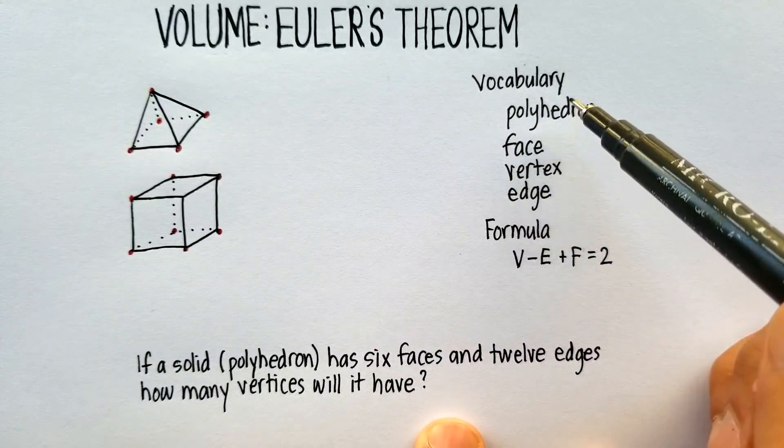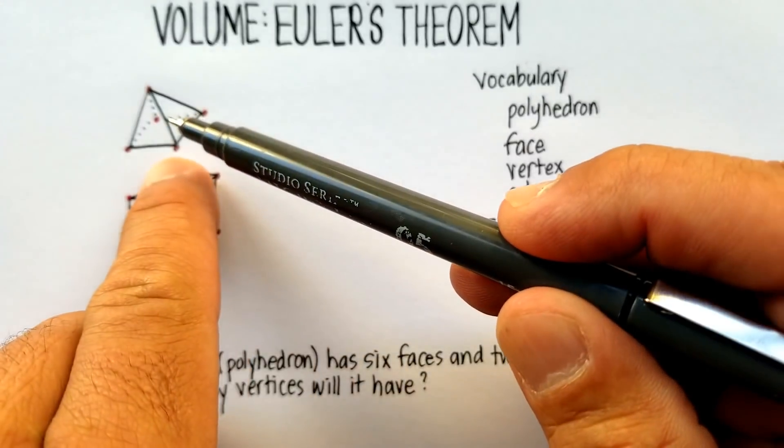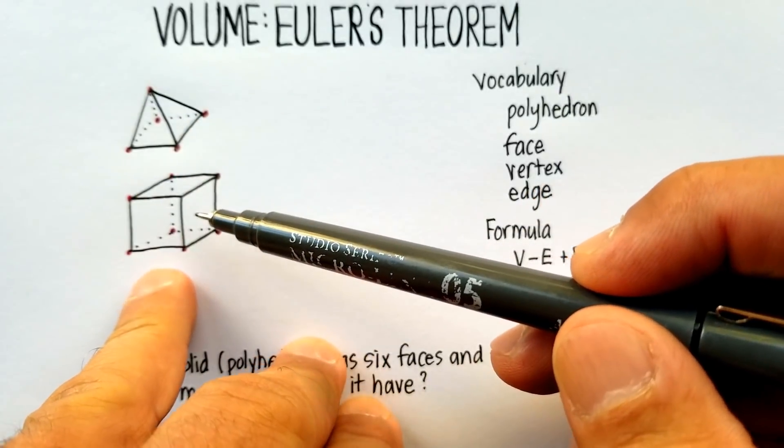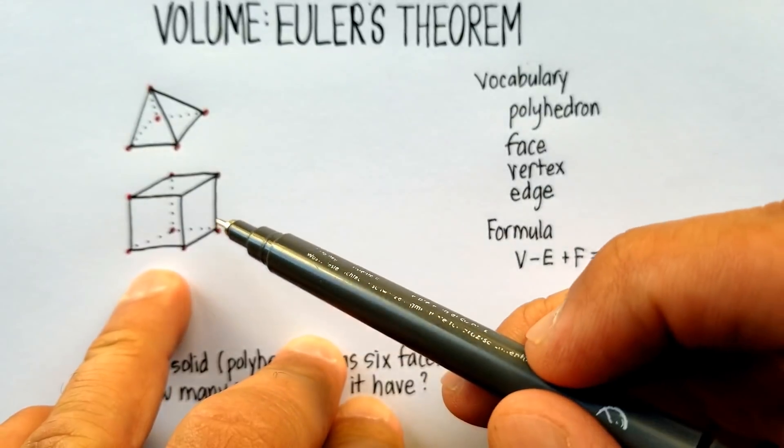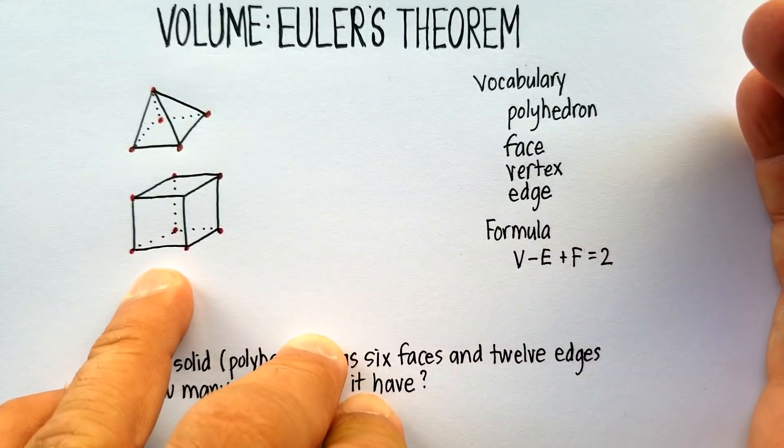A polyhedron is basically just a solid. It's a three-dimensional object in space. So things like pyramids, like the great pyramids of Egypt, for example, or cubes, which is a common volume that is used, like with boxes or even with building houses or buildings.